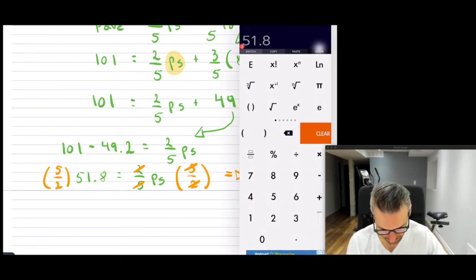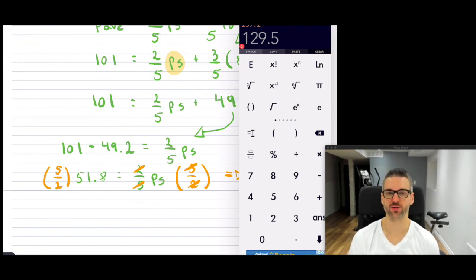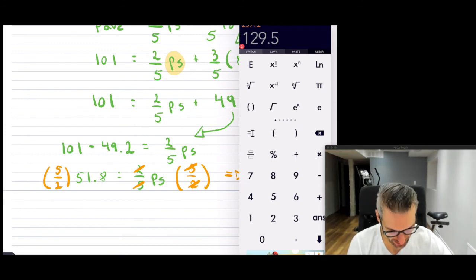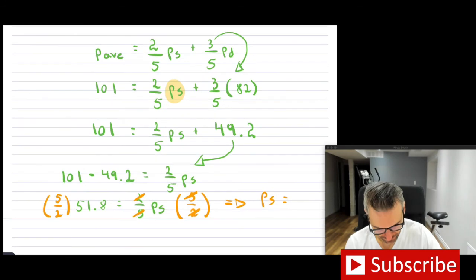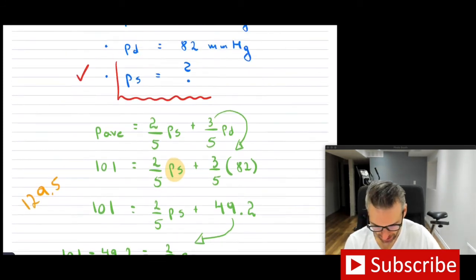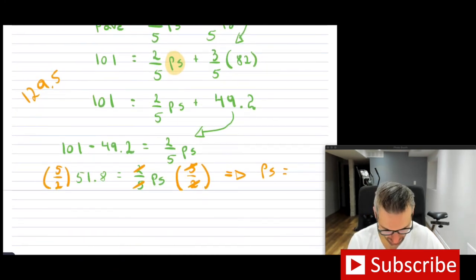So PS is five times 51.8 divided by two. You can take the fraction as a whole if you like, because 5/2 is just 2.5. So this is 129.5. Now it did say round to the one or to the whole number, so I'm going to round it. So this is going to be 130, and then don't forget the unit.